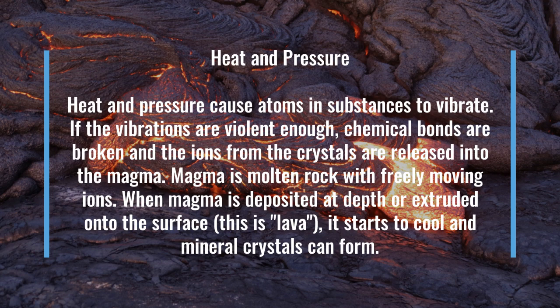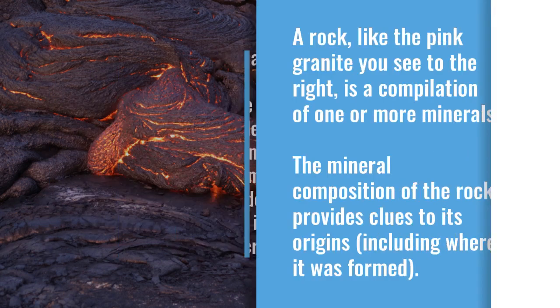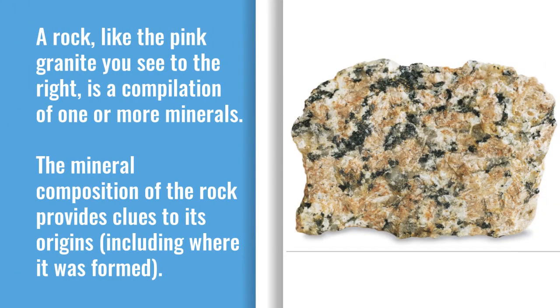When magma is deposited at depth or extruded onto the surface — this is lava — it starts to cool and mineral crystals can form. A rock, like the pink granite you see to the right, is a compilation of one or more minerals. The mineral composition of the rock provides clues to its origins, including where it was formed.